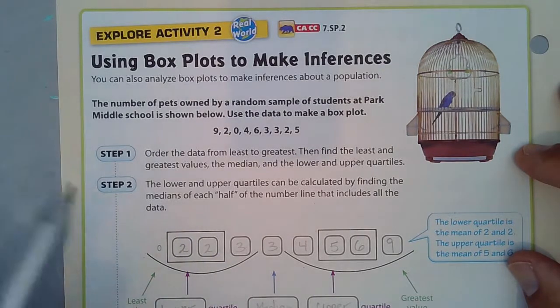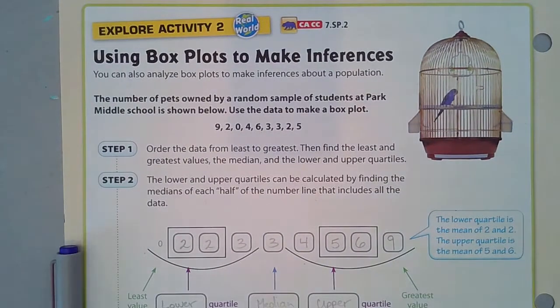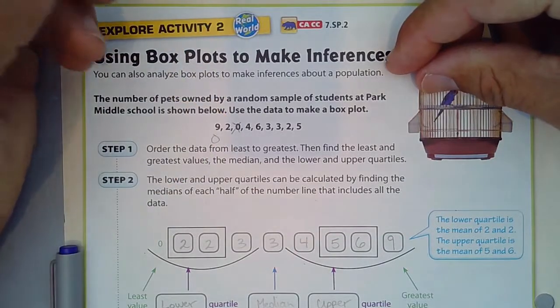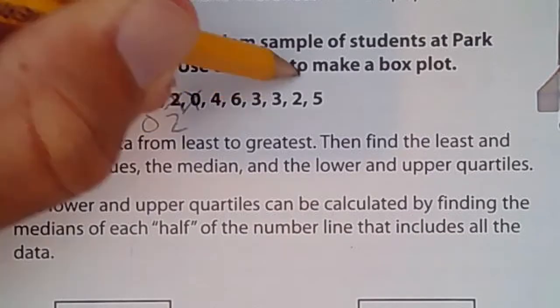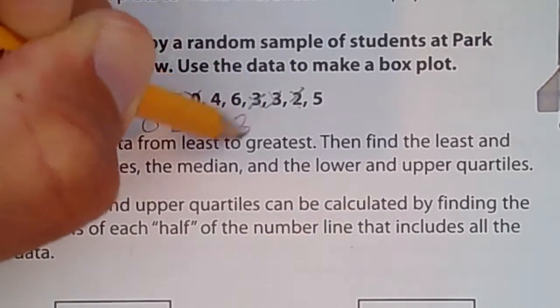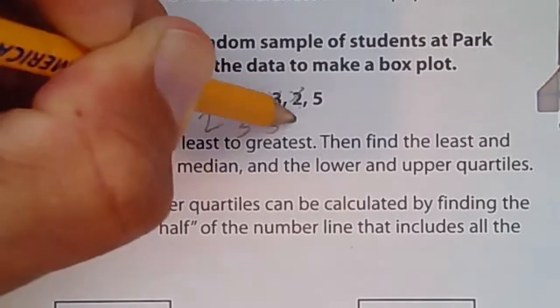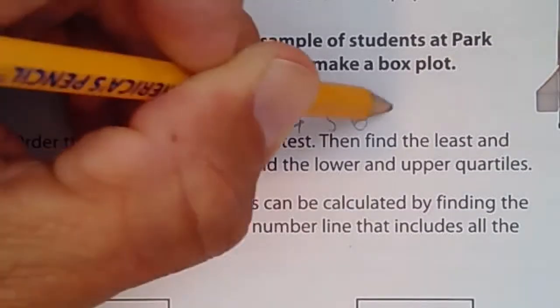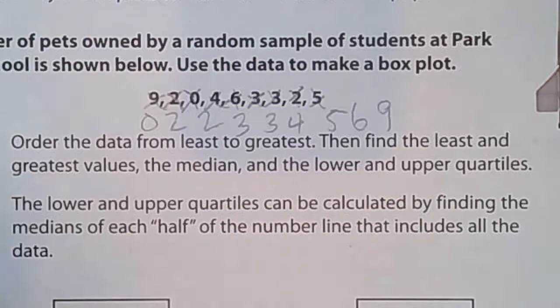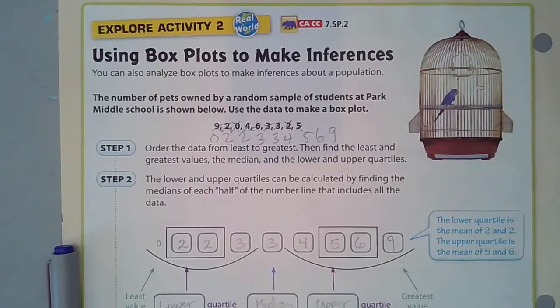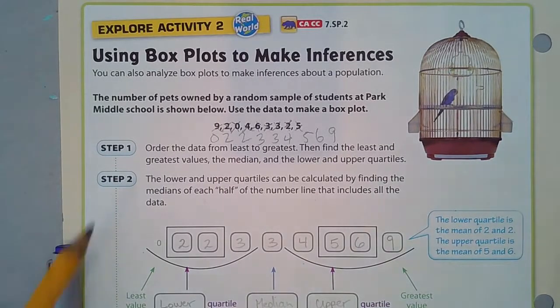Order the data from least to greatest. I will do that. We have zero first, and I'll cross that out. That's always valuable to do. Two, and two, and then three happens two times, four happens once, and then five happens, and six happens, and nine happens. I have all the data right there. I will zoom out and order it.